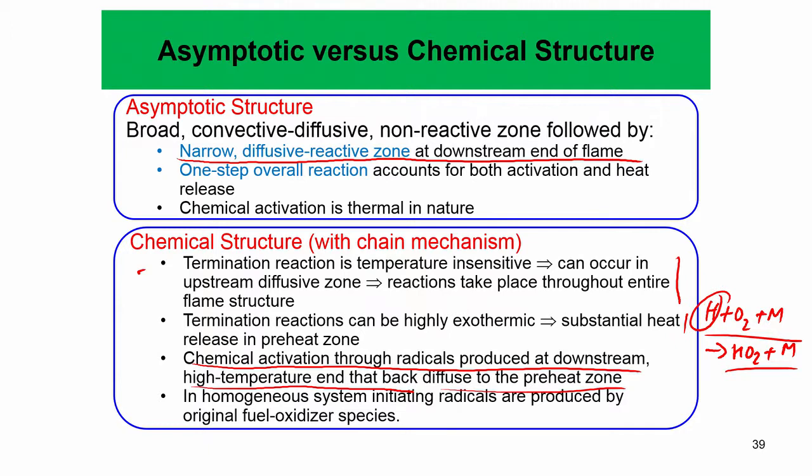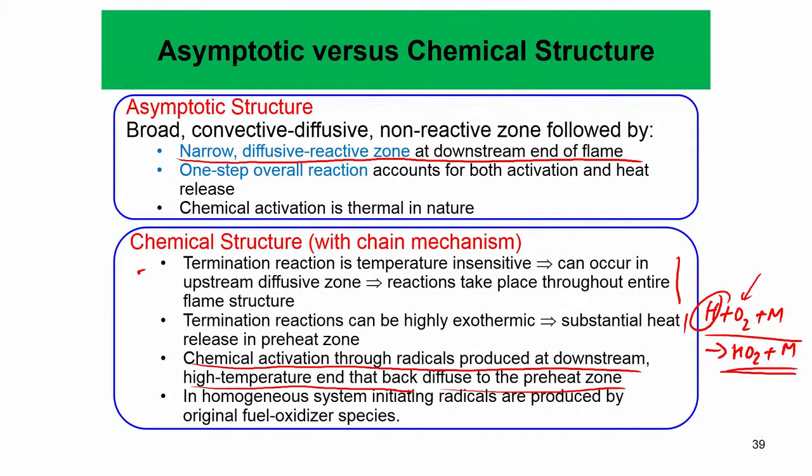For this termination reaction H + O₂ + M → HO₂ + M to occur and release a substantial amount of heat, you need the H radical present. In a homogeneous reactor, the H radical has to be produced simultaneously to attack the oxygen molecule. But in a flame, even if the H radical is produced later in a downstream region, it can back-diffuse upstream and react with an upstream oxygen molecule to form HO₂ + M and release a substantial amount of heat. That is what is different when you have diffusion processes — it couples earlier molecules with later molecules.